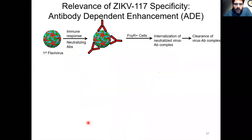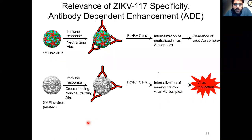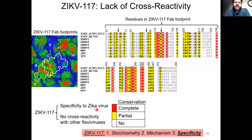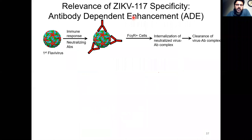Why should you care about the lack of cross-reactivity of this antibody? In immunology, you are taught that if you can find an antibody or antigen that induces a cross-reactive response, that is a good thing because it allows you to target and neutralize many related pathogens using one single vaccine or therapeutic. However, in the case of flaviviruses, the situation is not simple. This is because of a phenomenon called antibody-dependent enhancement, or ADE.